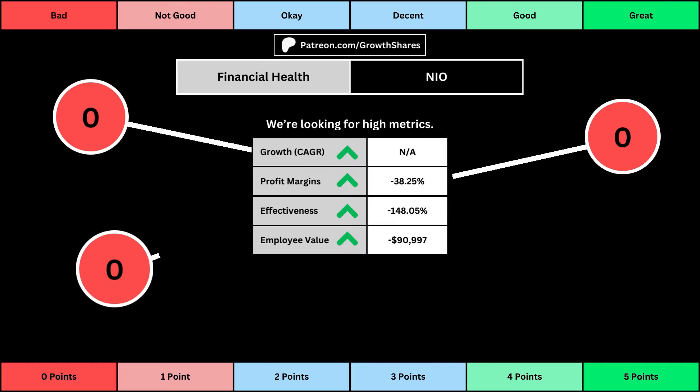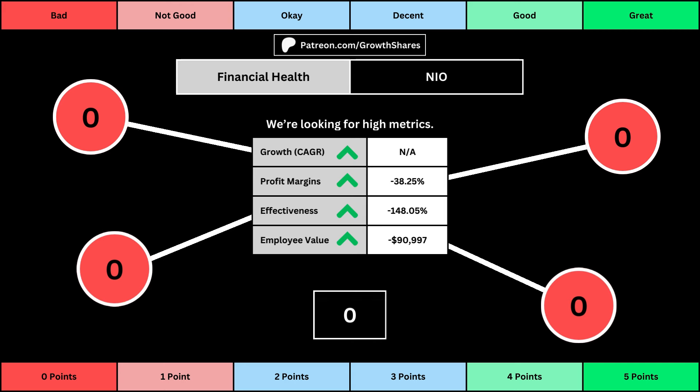The first set of metrics deal with the company's financial health: its projected earnings growth for the next five years, its profit margins, its effectiveness which looks at the company's returns on equity, assets, and invested capital, and then the employee value which looks at how much value the average employee adds to the business.